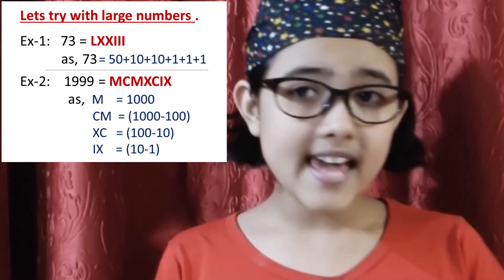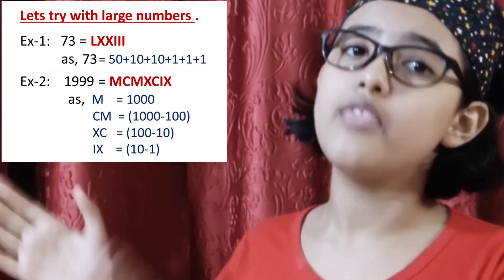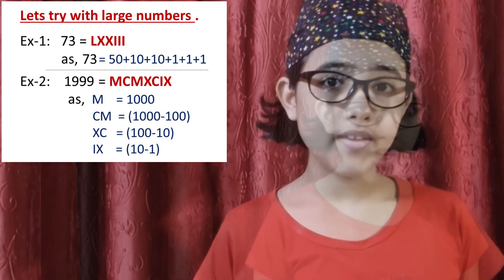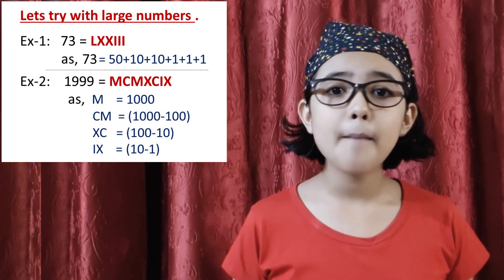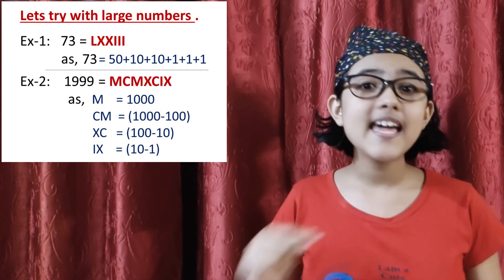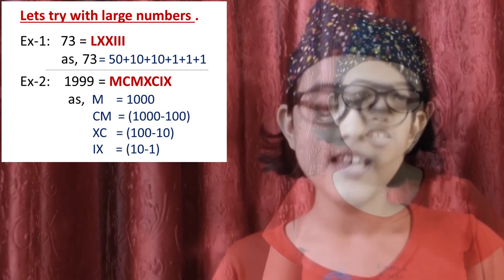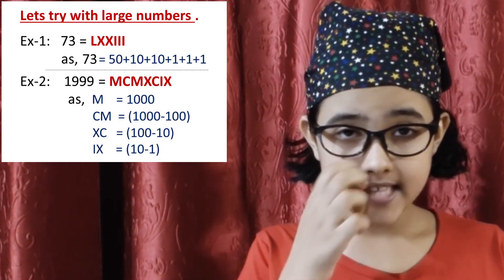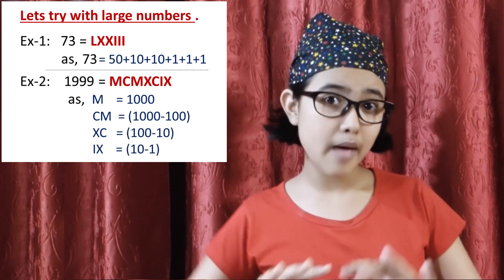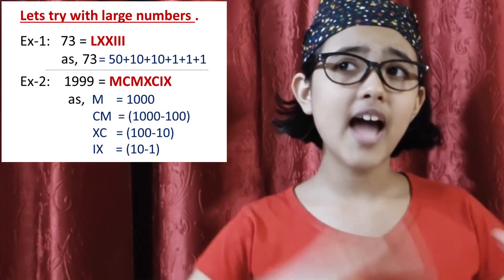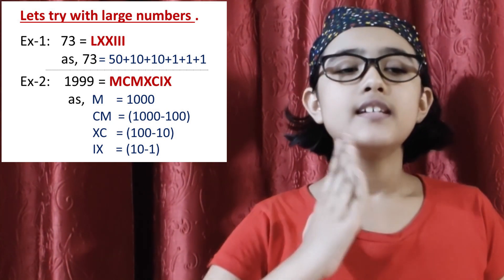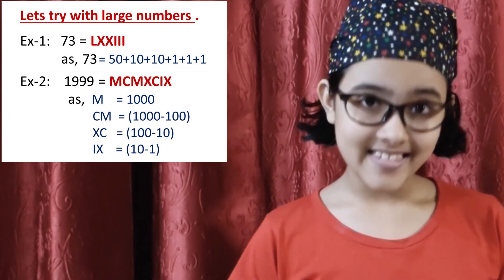Now let us understand how to add 90 with it. The closest basic number near 90 is 100. So we're subtracting X from C. So 90 is XC. Now, as we're adding this time, it's becoming complicated. 990 - the Roman numeral for it is CMXC.